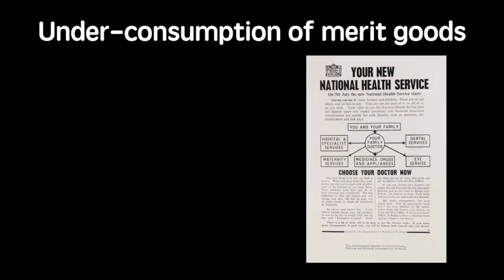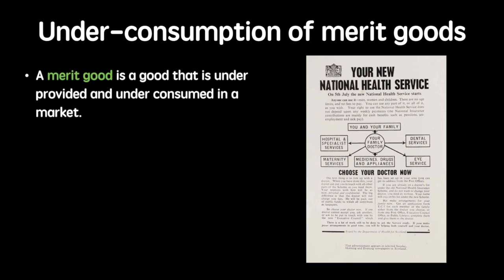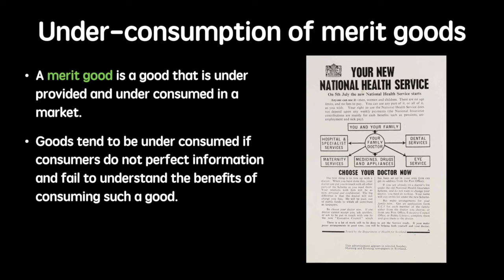The first cause of market failure is the under-consumption of merit goods, which is actually the result of information failure. A merit good is a good that is under-provided and under-consumed in a market, since consumers are not aware of its full benefits — they lack the information to consume more of it. This is an example of information failure. Since demand is relatively low for such products, they are less likely to be profitable and therefore under-provided.